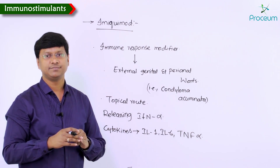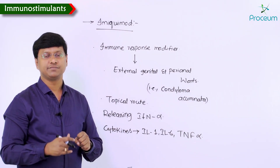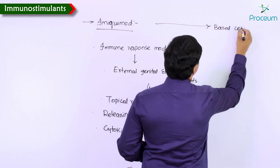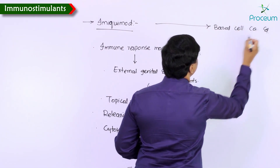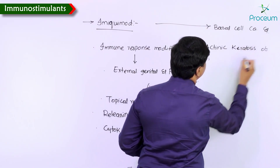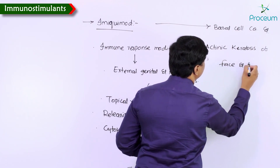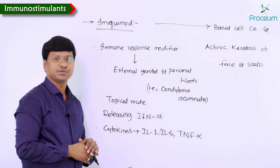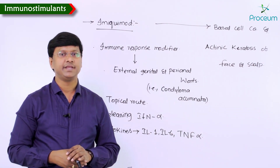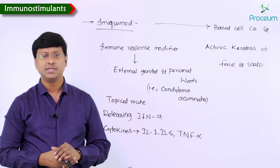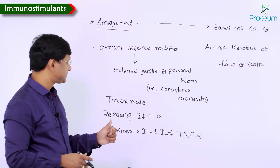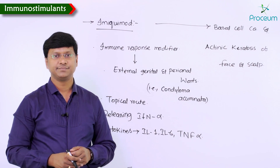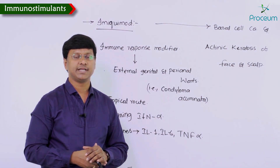Imiquimod has also been approved for malignancies of the skin — specifically basal cell carcinoma and actinic keratosis of the face and scalp. So, to summarize: imiquimod is an immune response modifier effective against condyloma acuminata via topical administration, acting through interferon-alpha and cytokines, and is also approved for basal cell carcinoma and actinic keratosis.